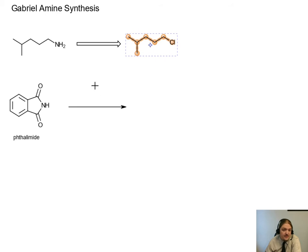But the overall sequence of the Gabriel Amine Synthesis starts with phthalimide, and we treat it with a base like sodium hydroxide. And it turns out that because the conjugate base here is resonance stabilized, the pKa of the hydrogen attached to that nitrogen is 8.3. So it's acidic enough to be deprotonated by something like sodium hydroxide. And then we're going to react it with our alkyl halide. And then the final sequence is a hydrolysis.